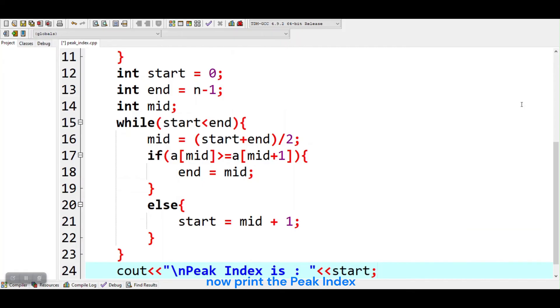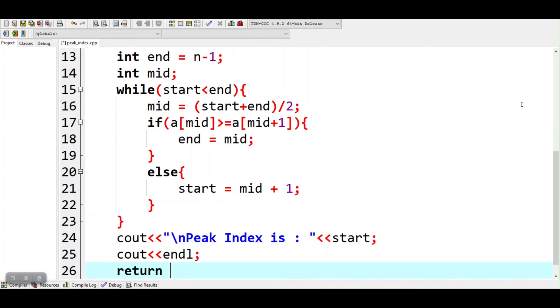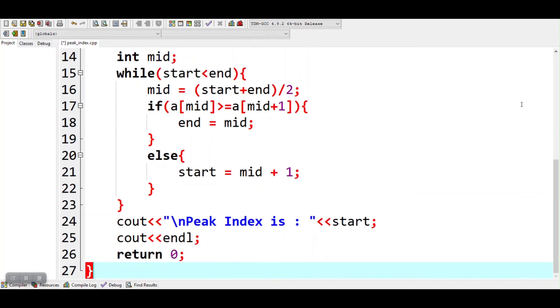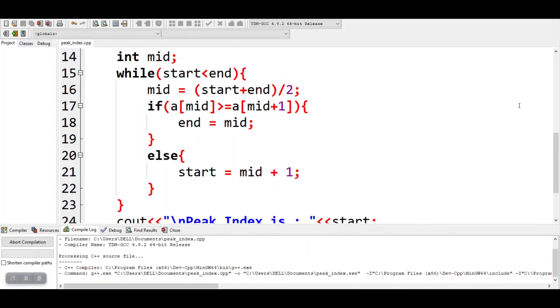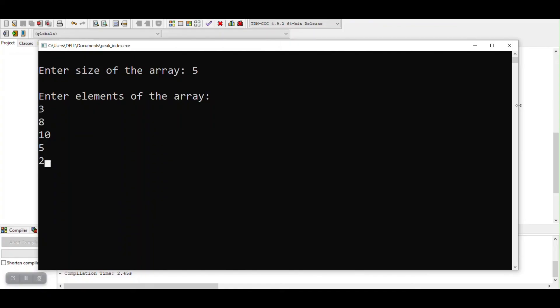Now print the peak index. Let's run the program. Do like and subscribe the channel.